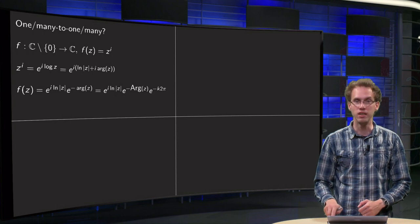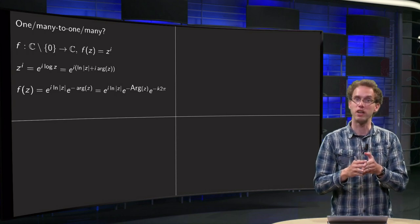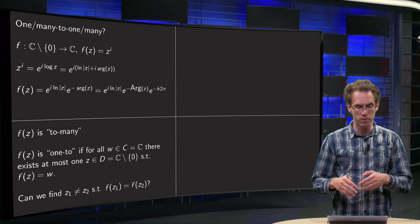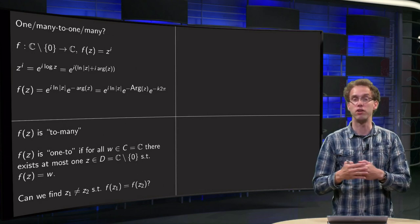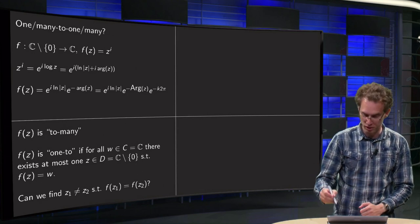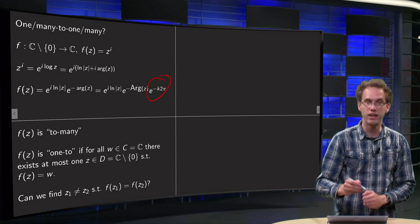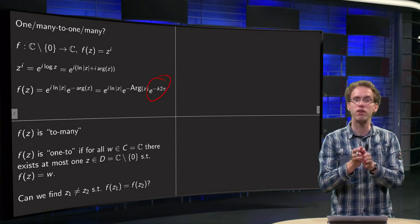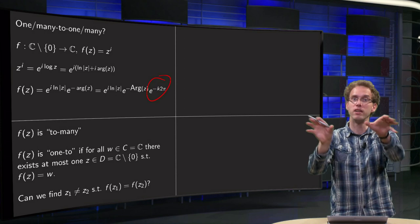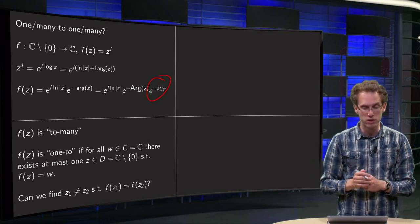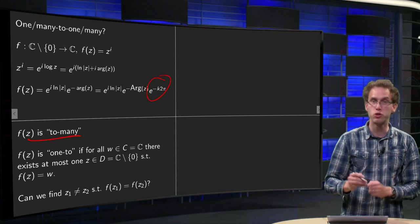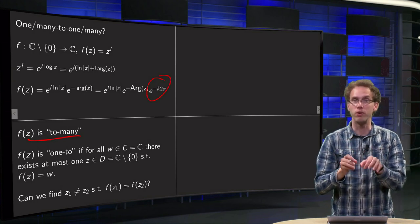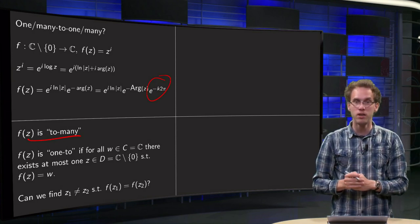And we see if you pick one value of z you can get many values for your function because you can take any k you want. So for a given value of z you map to many values in your codomain. So f(z) is to-many. One value maps to many values.